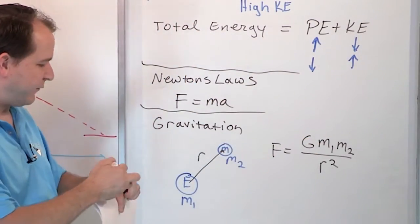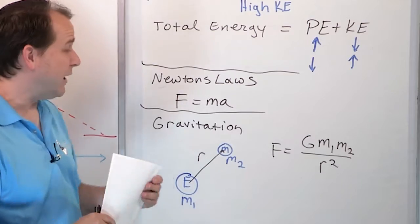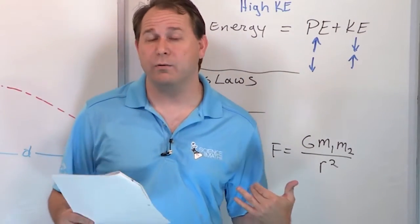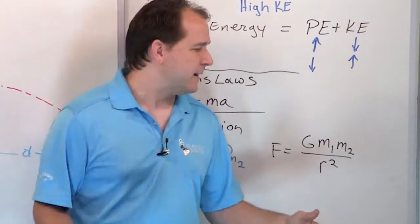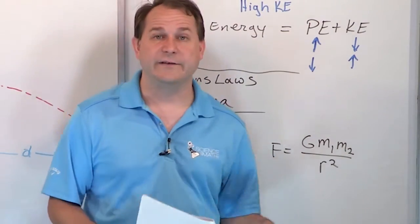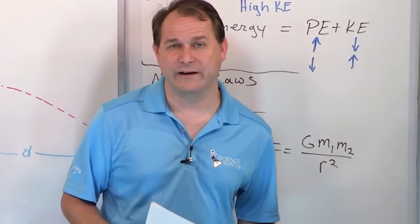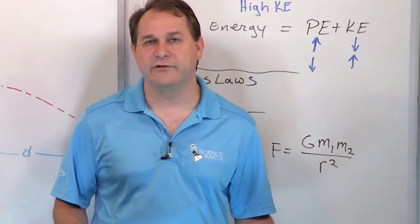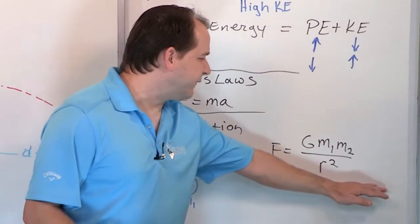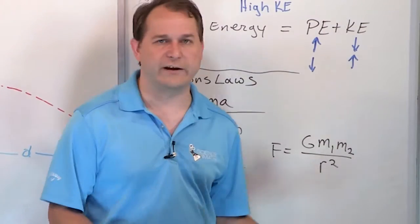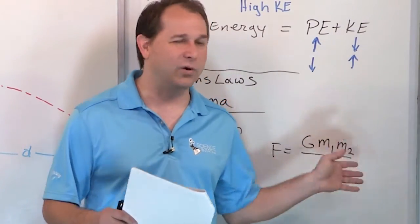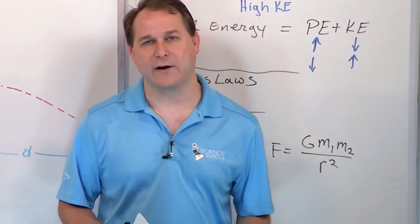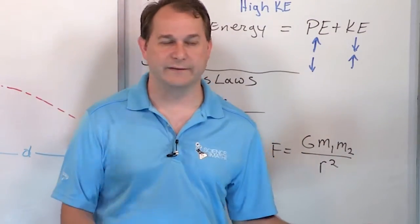So this is called the universal law of gravitation. Now we actually know now that Einstein, a couple hundred years later, released and invented his theory of gravitation. And his theory of gravitation is actually more correct than this one. But still, this is a really good starting point to understand gravity and we're going to solve lots of problems using Newton's form of gravity because it's a whole lot simpler than Einstein's theory of gravity, which is beyond the scope of this class.